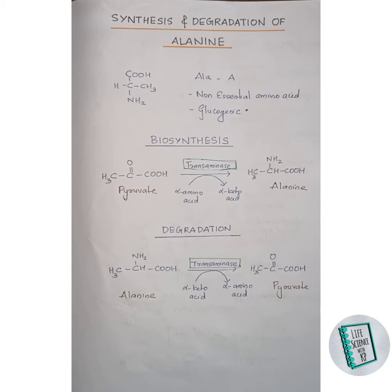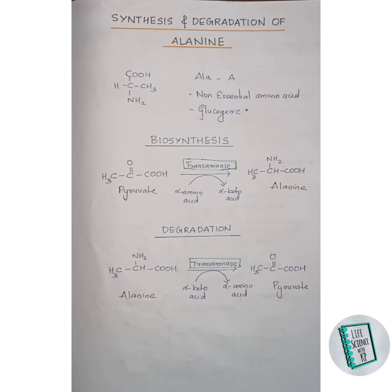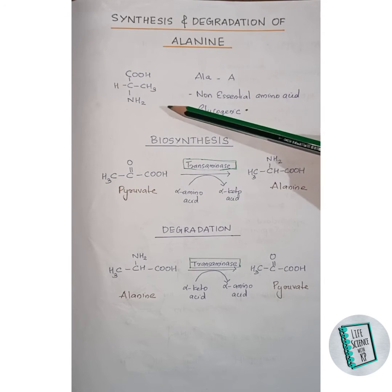Alanine is a non-essential amino acid and it is glucogenic in nature. It has a methyl group R group in its structure. The three letter representation of alanine is ALA and the single letter representation is capital A. This is the structure of alanine.